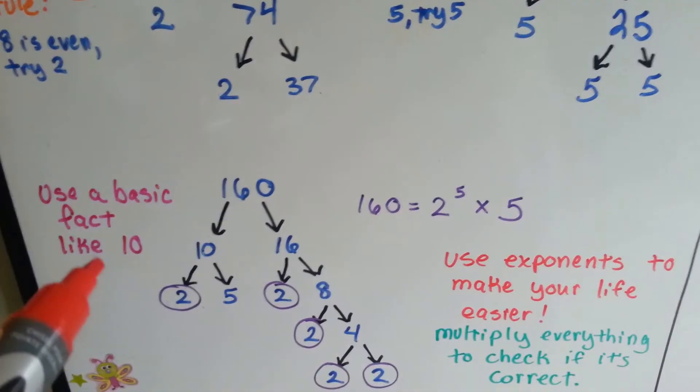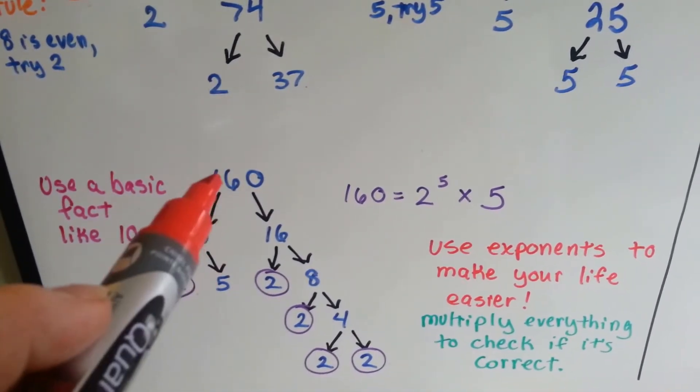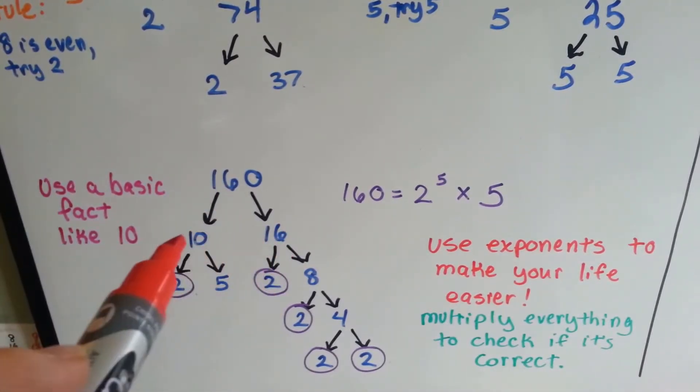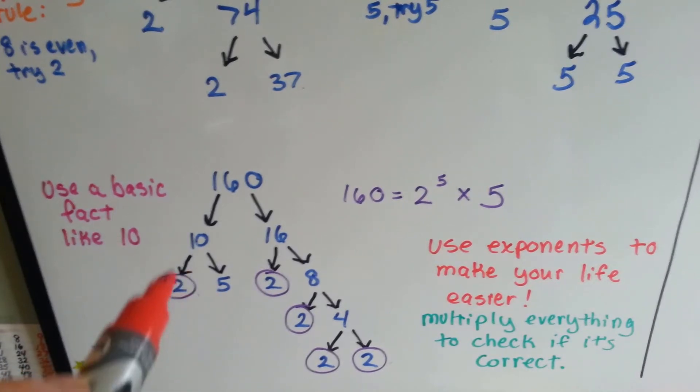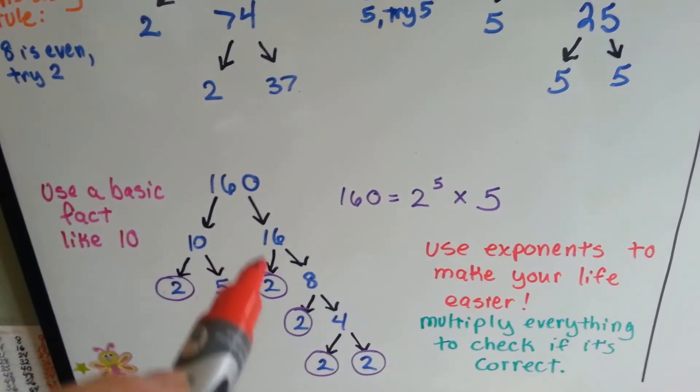We can also use a basic fact, like 10. So if you're trying to do the prime factorization for 160, we can say, 10 times what is 160? 10 times 16. Then you've got to break the 10 down, 2 times what is 10? 2 times 5. Then we've got to break the 16 down. What times what is 16? 2 times 8.